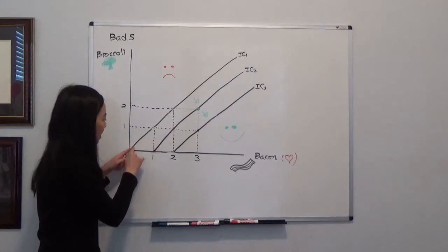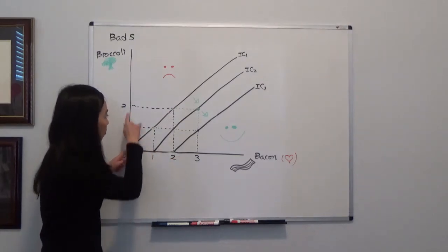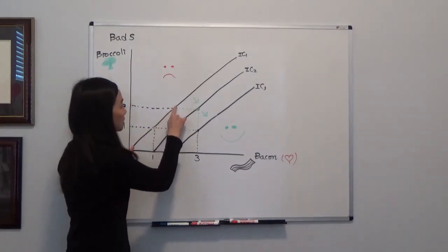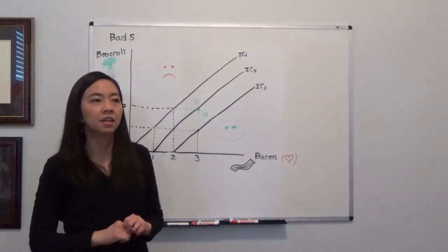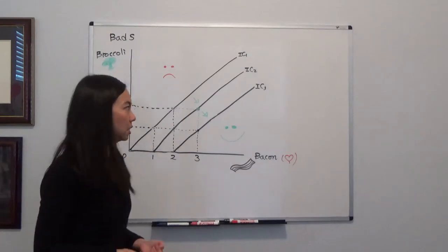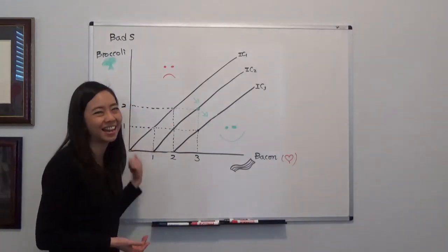You see that more bacon and more broccoli causes Jason to remain on the same indifference curve. In fact, Jason is not very happy. Jason would be happier if you give him more bacon and less broccoli.